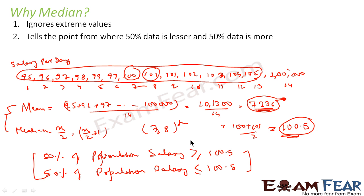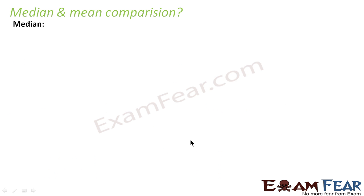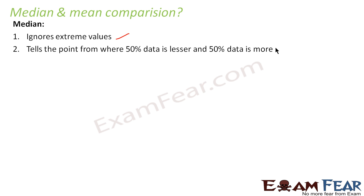So in case of skewed data with extreme values, the median that comes out is sometimes more relevant than the mean for teams like the sales team. In that case we use median. But then the question is: when median is better than mean, why not always use median? Let's compare median and mean. As we said, median ignores extreme values, and from median we can tell whether 50% of data is less or more than the median.